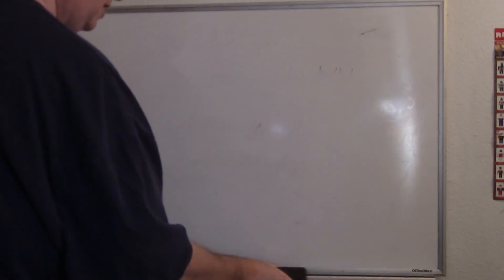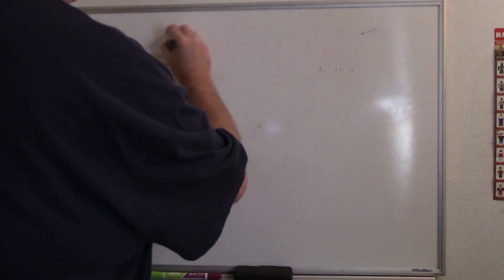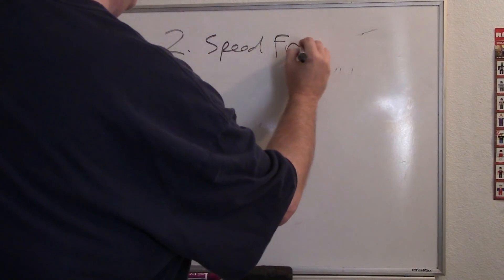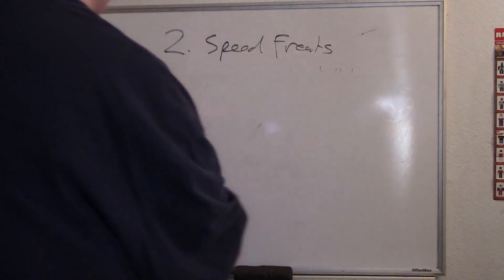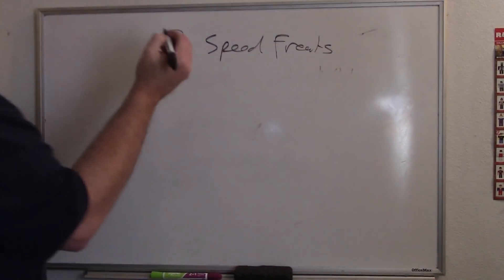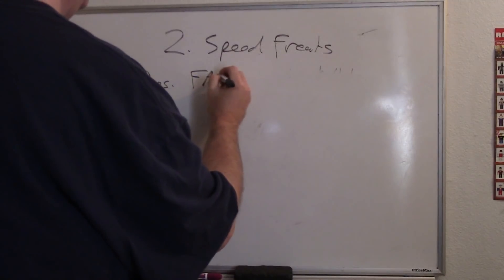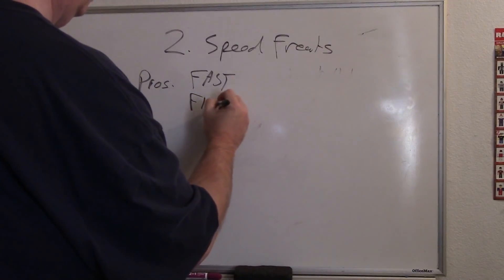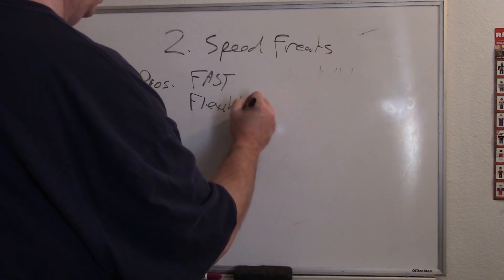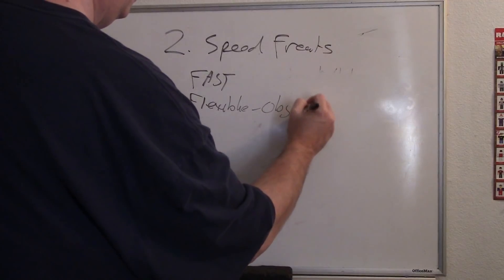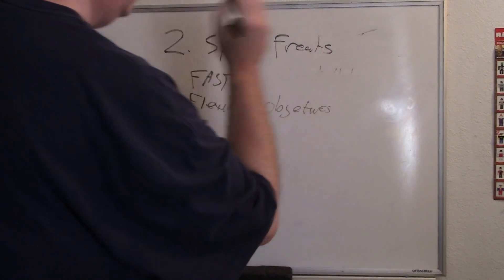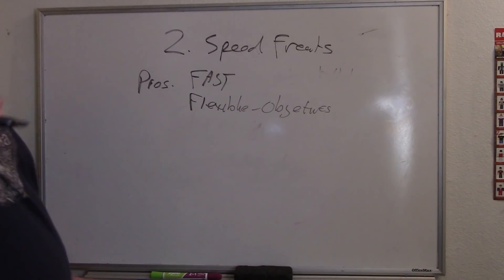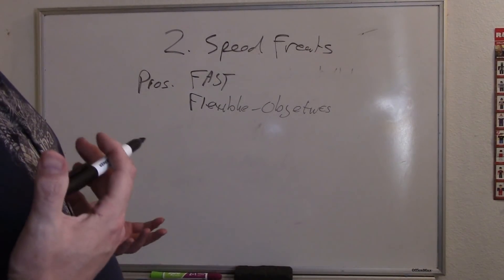The second archetype is speed freaks. Pros to the speed freaks: fast obviously, flexible objectives. In an objective based game, having models that can move quickly, get to those objectives and hold them fairly well, it works out pretty well.